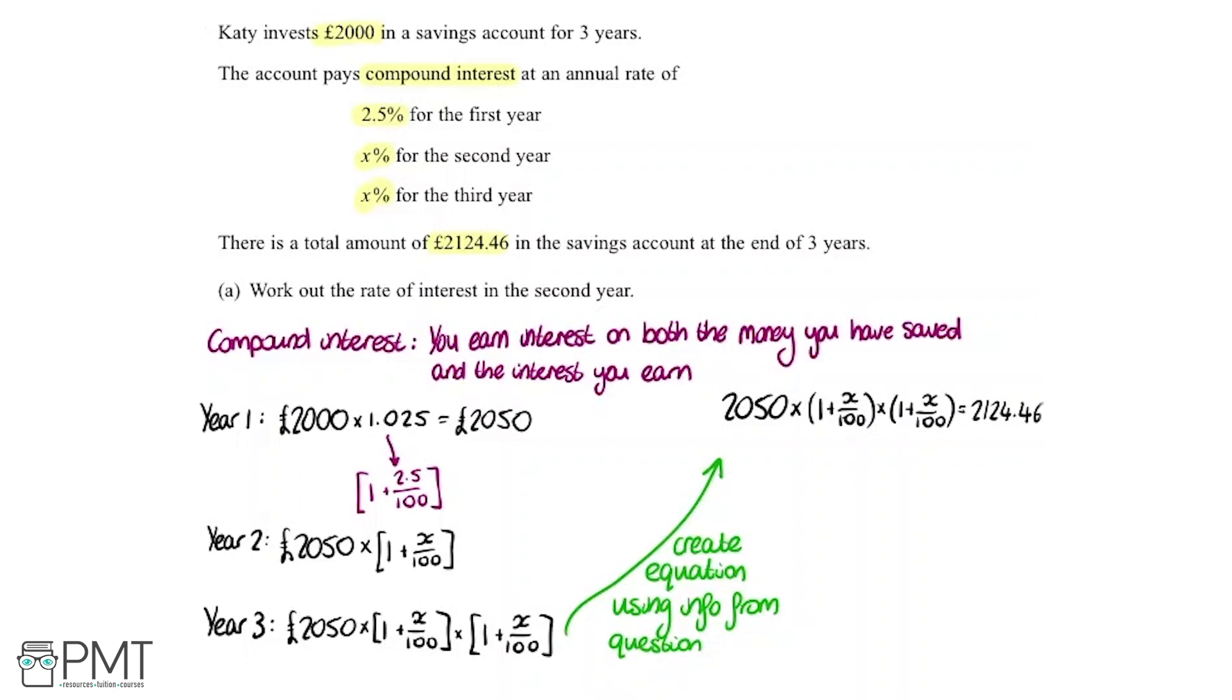One thing I notice here is we've got two terms that are identical, and we're multiplying them together. We can actually write that as a single term squared. To write this more simply, I'm going to write it as 1 plus x over 100 squared, because we're multiplying by it twice.